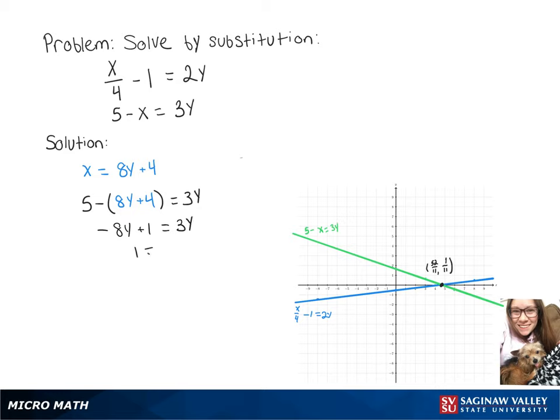When we add 8y over, we get 1 equals 11y, then divide both sides by 11, which gives us a y value of 1 over 11.